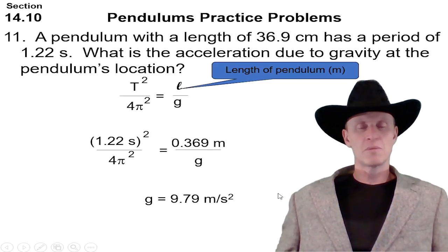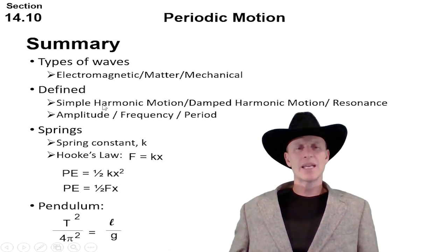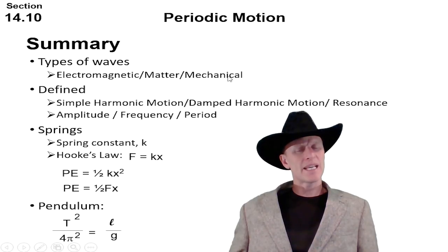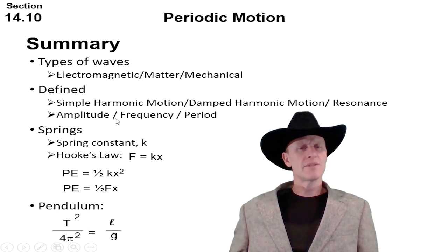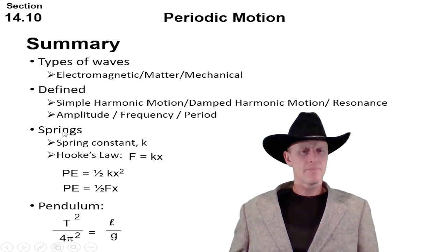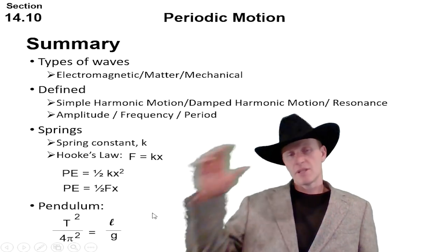All right, so that's it folks. We talked about the types of waves: electromagnetic, matter, and mechanical. And remember these first two we really can't get our hands on to collect data on, measure and mess with and learn more about waves, but the mechanical waves we can. The pendulum for example and the spring we can get our hands on and measure different properties of waves. So we defined simple harmonic motion, damped and resonance, and we talked about amplitude, frequency, and period. Now we have two different formulas here: one for springs, one for pendulum. Remember the spring has a spring constant in this formula for Hooke's Law, F equals kx, and we have two formulas for potential energy: one half kx squared, one half Fx. And finally our pendulum relationship here, our pendulum formula says the period squared divided by 4 pi squared equals the length divided by gravity. So that's it folks. Cowboy Joe is out.